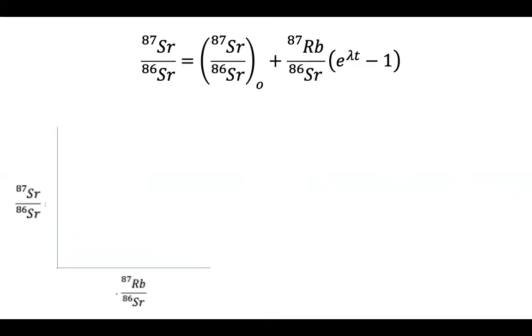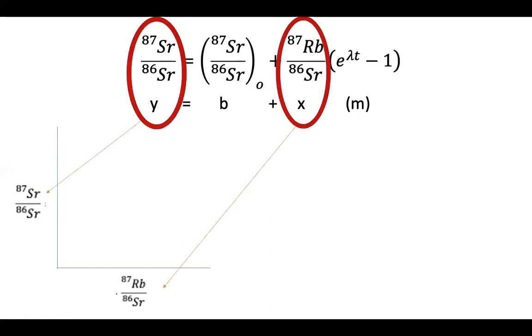This equation can also be displayed as y equals b plus x times m, which should sound familiar as it's the same as the slope of a line, y equals mx plus b. So we have y and we have x from measurements of the rocks, but we need b and m. And to find them, we will take the slope of the line.